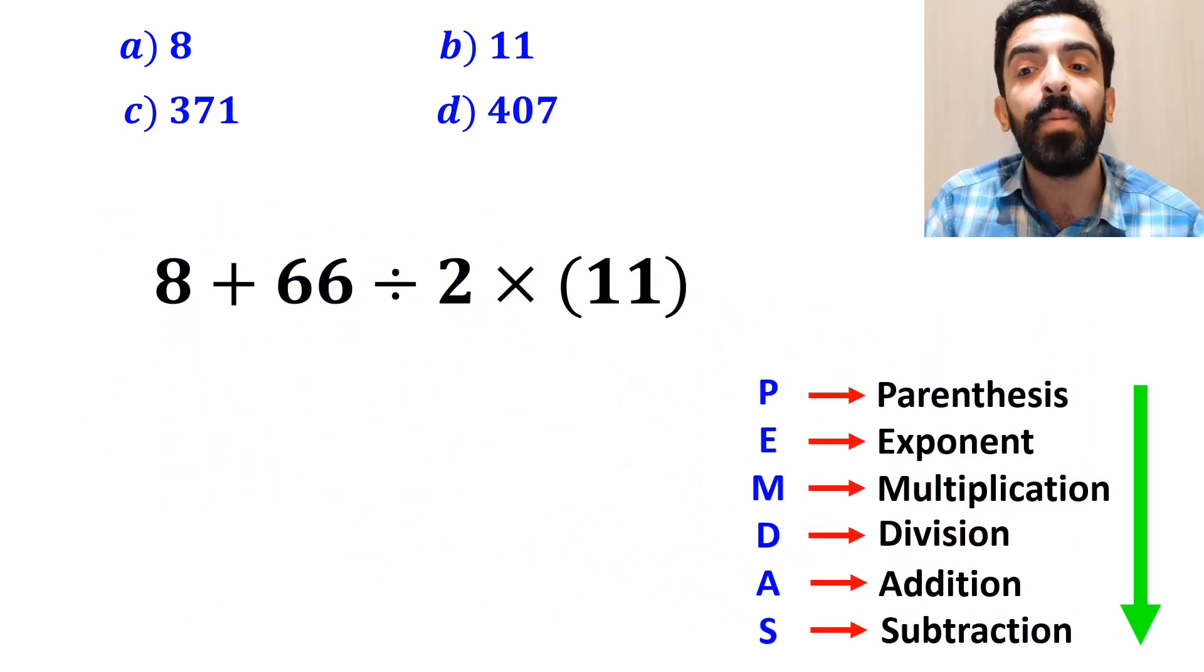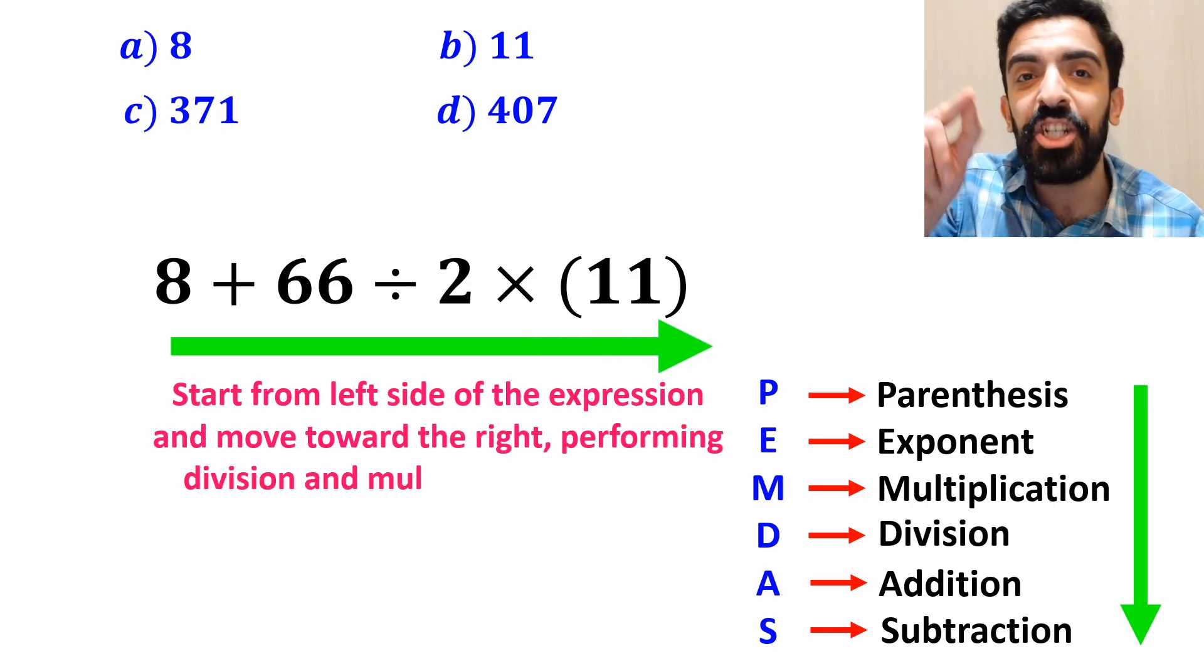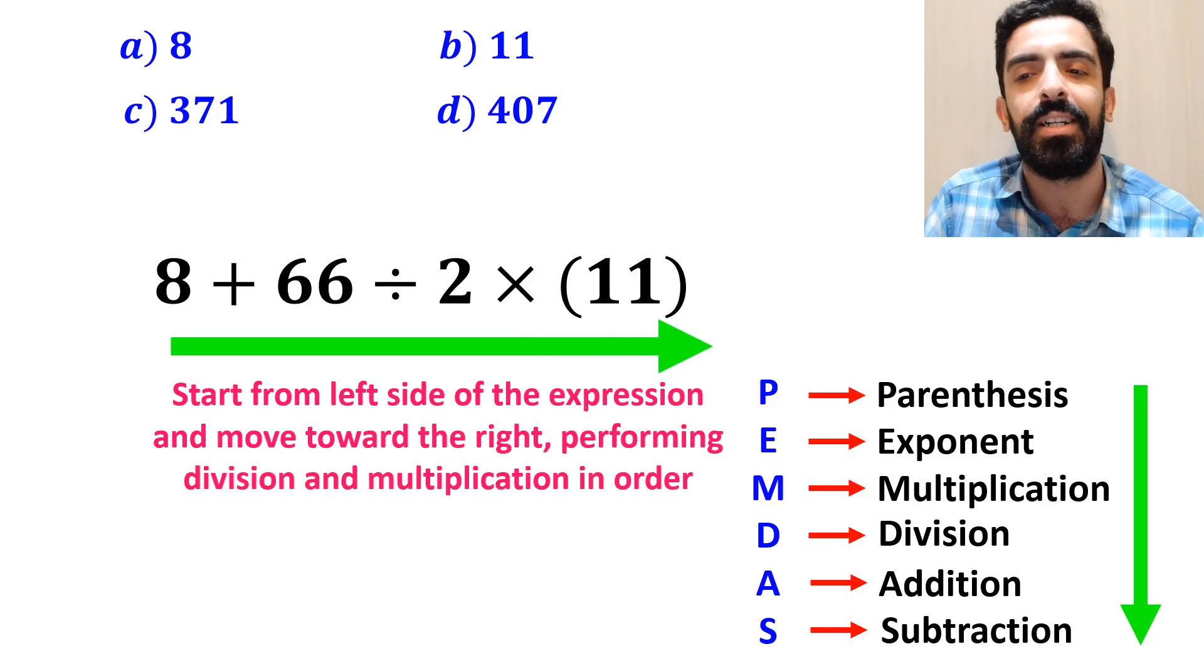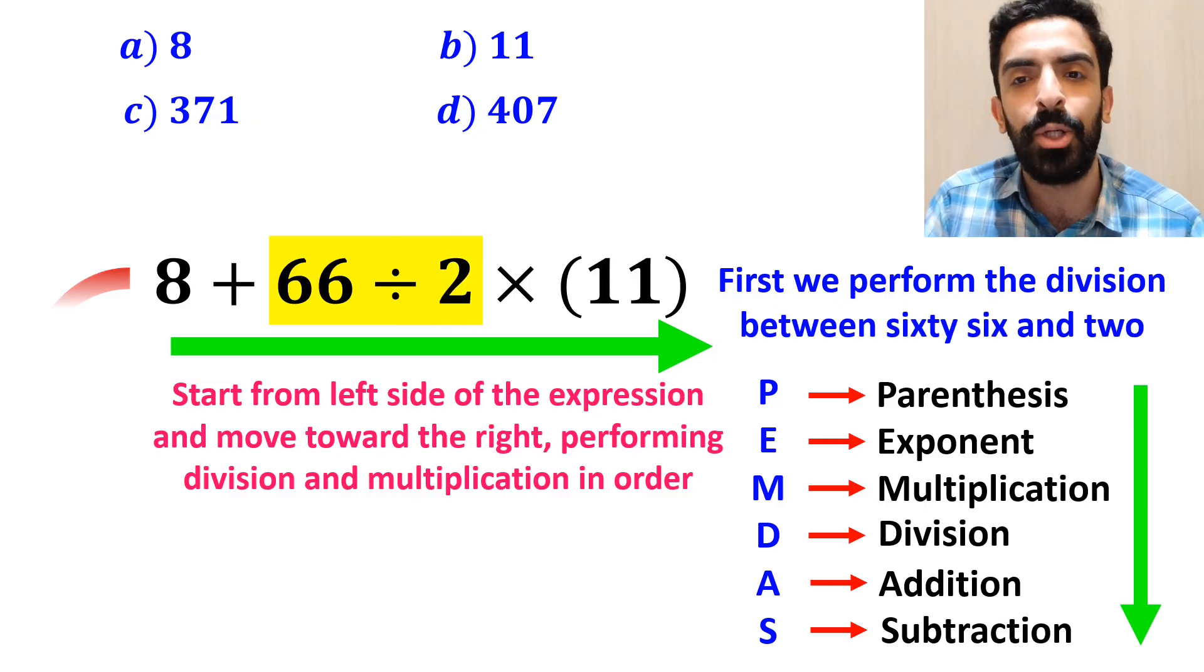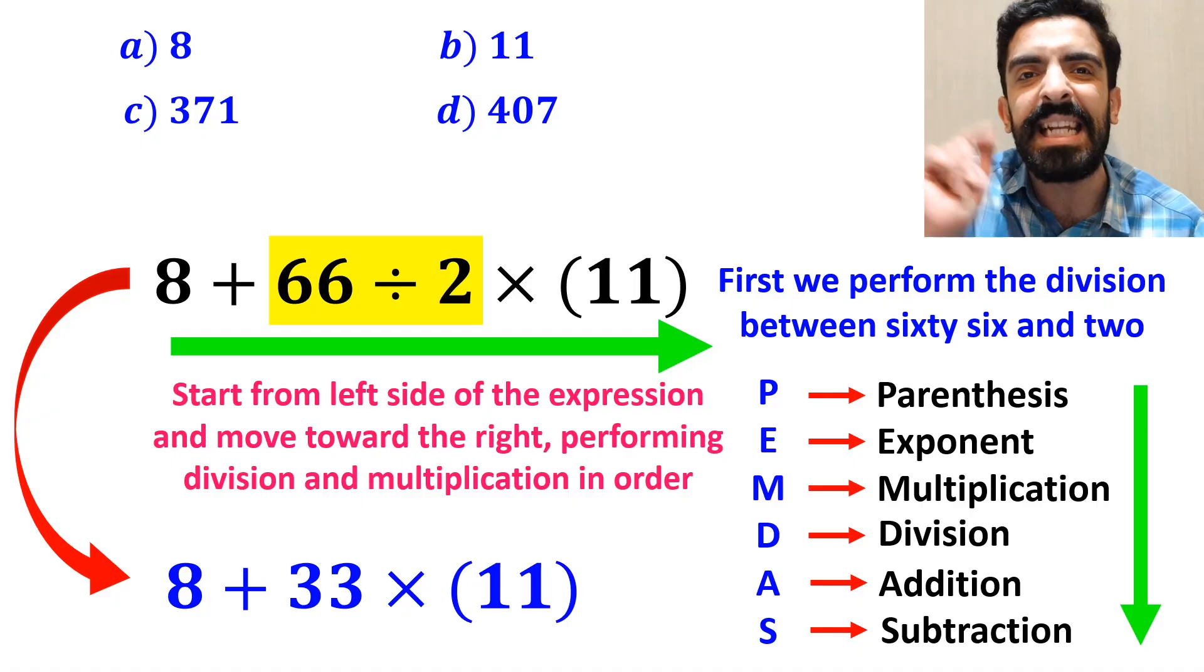In this case, the best thing to do is to start from the left side of the expression and move toward the right, performing division and multiplication in order. So, first we perform the division between 66 and 2, which simplifies this expression to 8 plus 33 times 11.